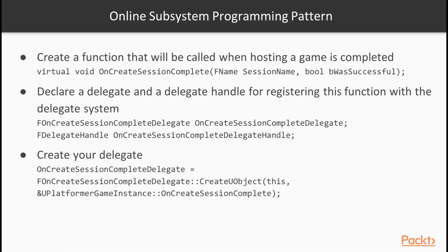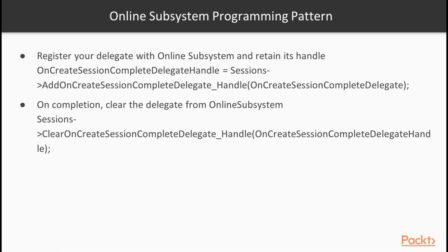Thirdly, you're going to create your delegate before using it. Then, before you call your specific functionality, you're going to register your delegate with the Online Subsystem and retain the handle in the delegate handle we created earlier. You then call the function on the interface that you're working with, and upon completion, your delegate function is called. Within the delegate function, you're going to make sure to clear your delegate handle. This pattern of declaring and using delegates is repeated for most, if not all, the functionality you will be accessing within the Online Subsystem.